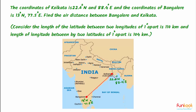We have to find the straight line distance between two points whose coordinates are known. Longitude and latitude are being taken as the coordinates here. If we find the difference between respective latitudes and longitudes and then construct a right-angled triangle, then by application of the Pythagoras theorem, we will be able to solve the problem.